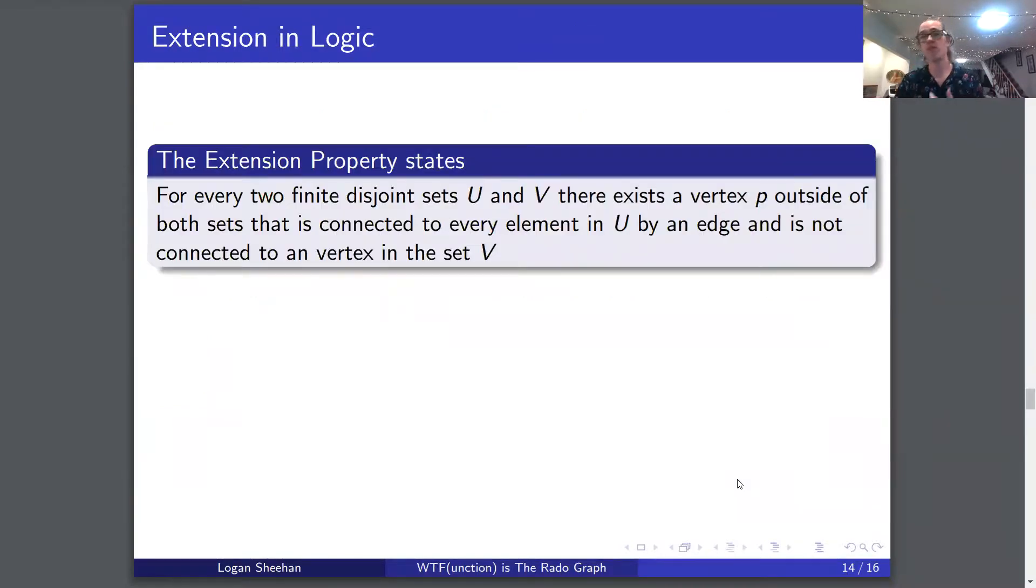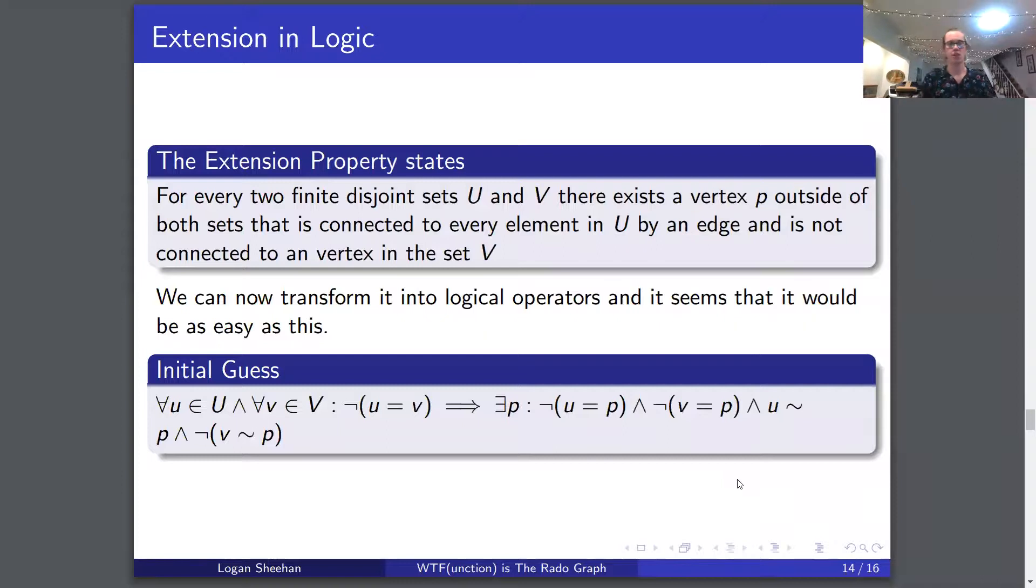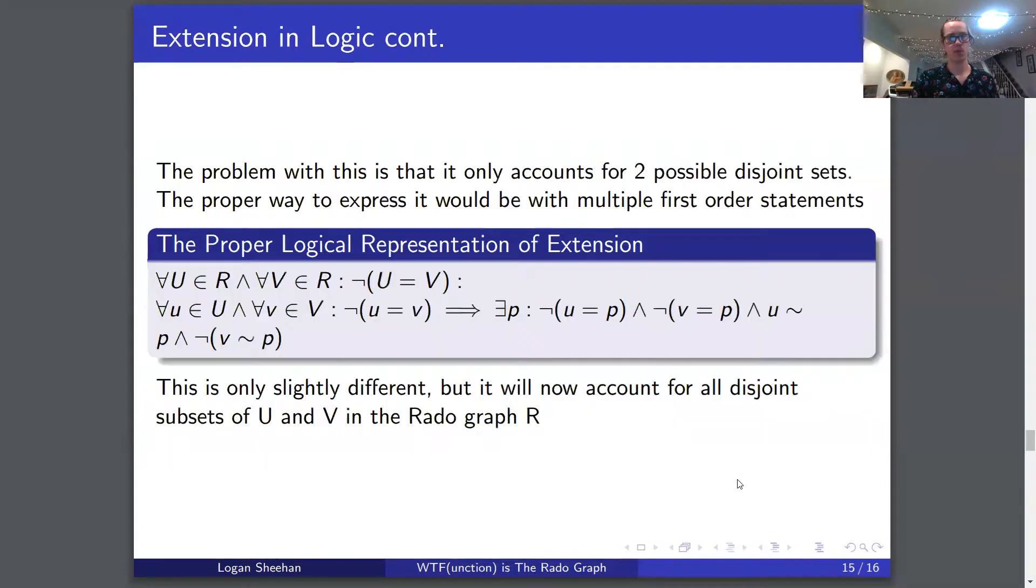So now we can go to one of our properties, our favorite property, the extension property. For every two finite disjoint sets U and V, there exists a vertex p outside of both sets that is connected to every element in U by an edge and not connected to a vertex in set V. We can transform this into logical operators, and it seems it would be this easy: for all u in U and for all v in V such that u does not equal v, this implies there exists a p such that u does not equal p, and v does not equal p, and u is related to p, and v is not related to p. Well, that's what it seems like, but we actually can't do that. The problem is it only accounts for two possible disjoint sets. We need it to account for all possible disjoint sets.